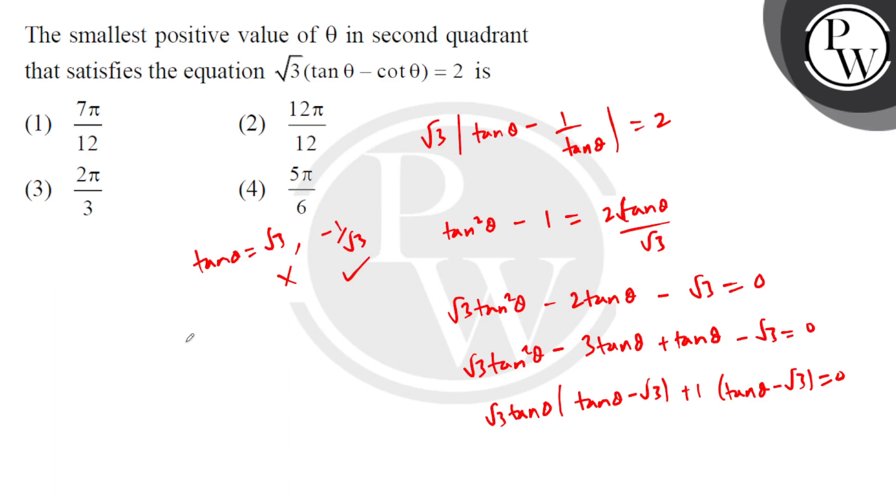So basically, 1 by root 3 is the 30-degree value, so it will be pi minus pi by 6. So theta is pi minus pi by 6, which is 5 pi by 6. The correct option is option 4. I hope you understood well, best of luck, thank you.